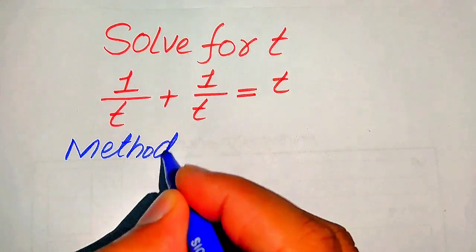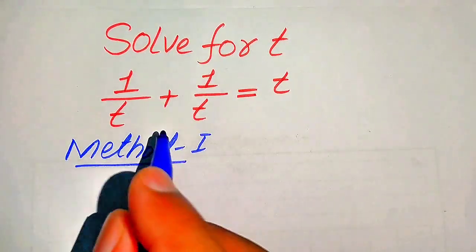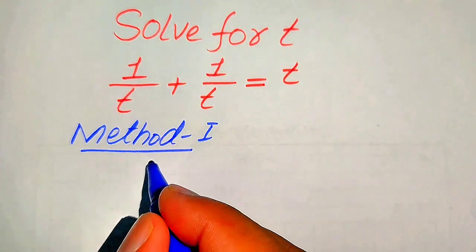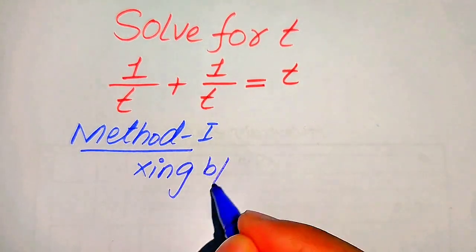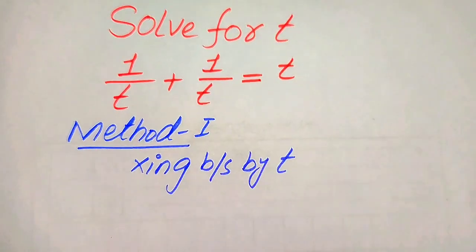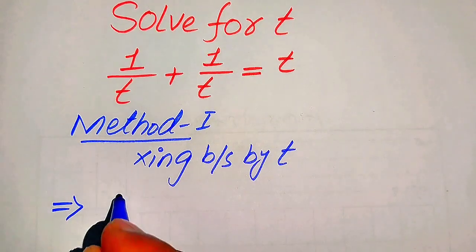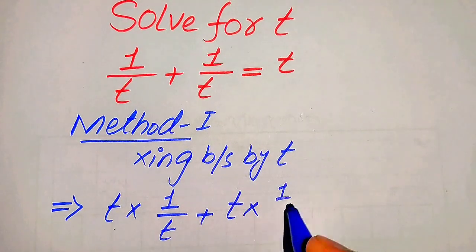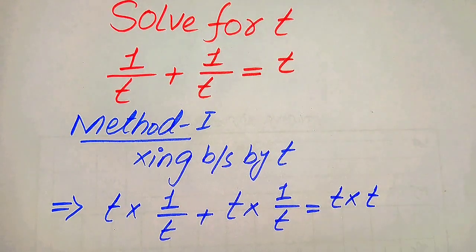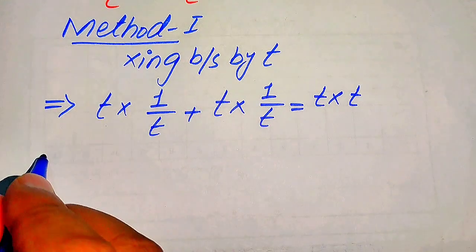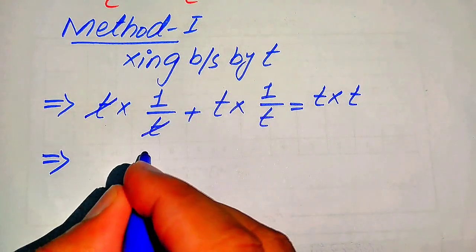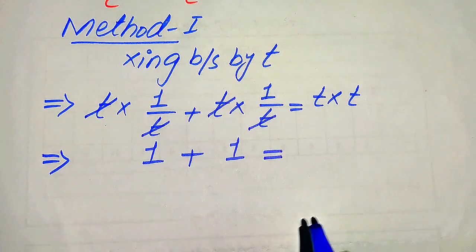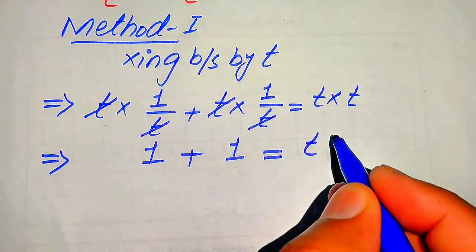In the first method, we multiply both sides by t in order to remove the fractions from the left-hand side. When we multiply by t, the equation becomes: t × (1/t) + t × (1/t) = t × t. The t's cancel on the left side, giving us 1 + 1 = t².